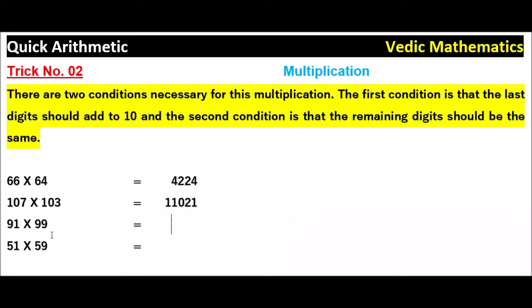91 into 99. So 1, 9 is a 9. You have to write 0, 9. If it is single digit, you have to write 0, 9. Then what is the next number after 9? 10. So 9 into 10, 90. So that is equal to 9009.